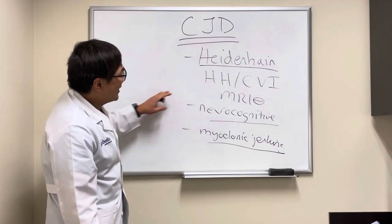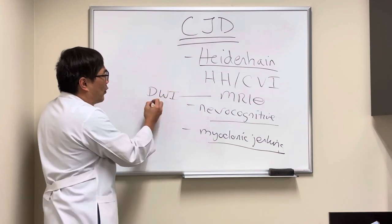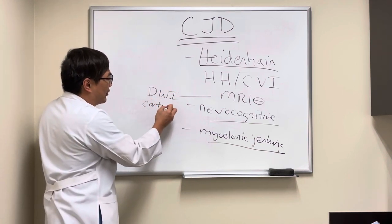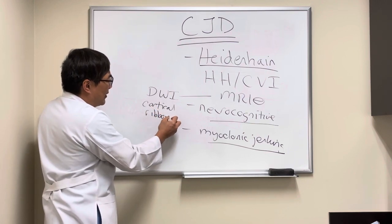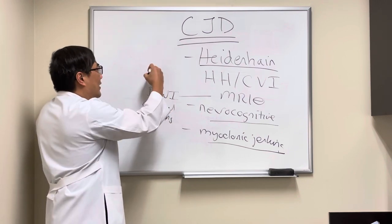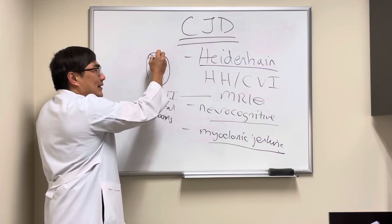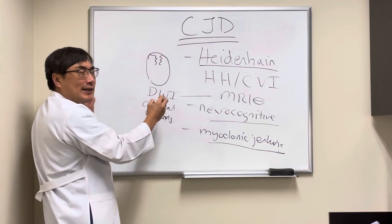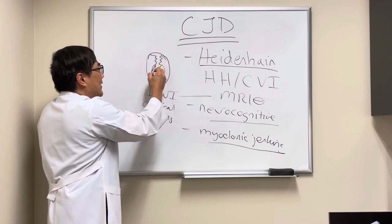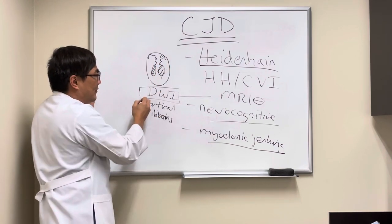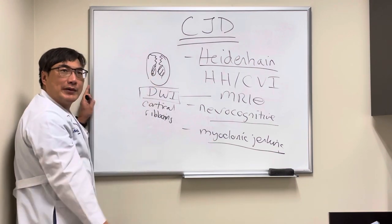The MRI scan eventually starts to show abnormalities, and DWI shows this very peculiar cortical ribboning — a ribbon of DWI abnormality that is hyper-intense in the cortex. That is a classic CJD sign: restricted diffusion in a cortical ribboning pattern.